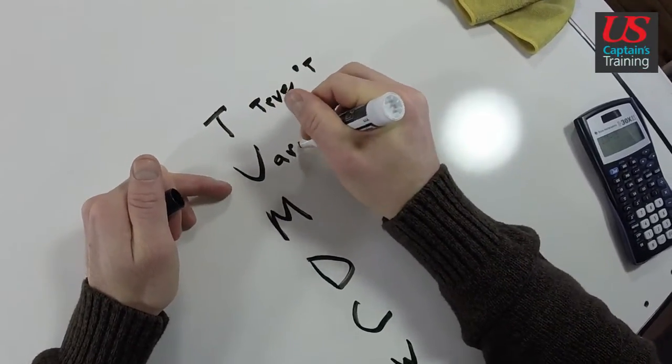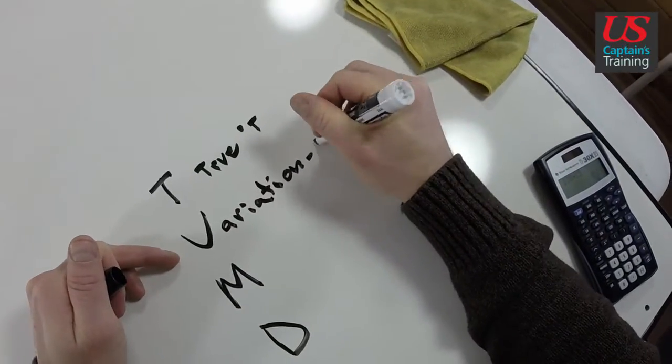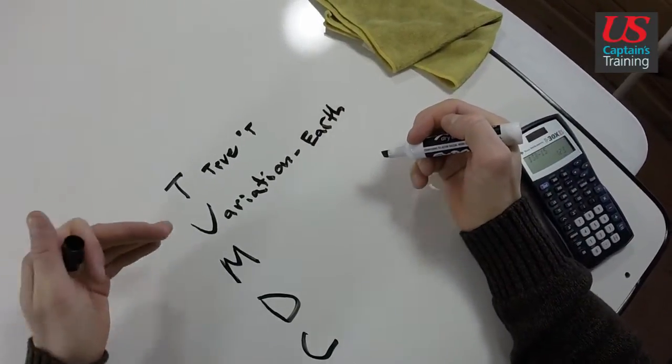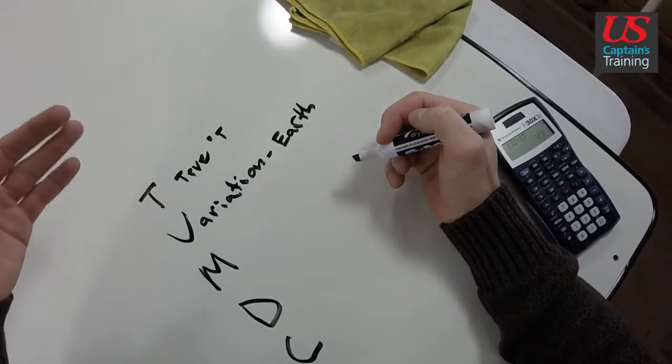V stands for variation. Variation is where are you located on the earth? Where is your position on the earth? Your position on the earth affects the compass on your vessel.